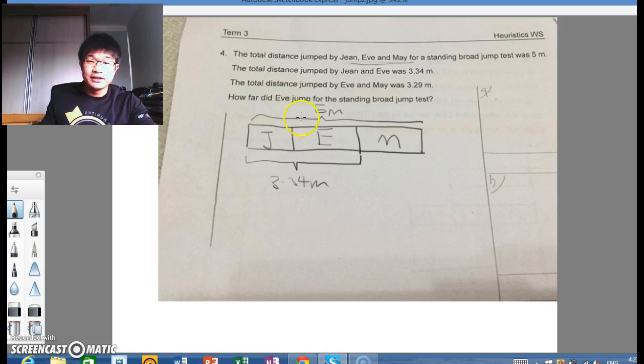So, it's quite clear at this point in time, primary three or primary two children would be able to see that to find May, you just take 5 minus 3.34 meters, you get 1.66. So May jumped 1.66 meters.